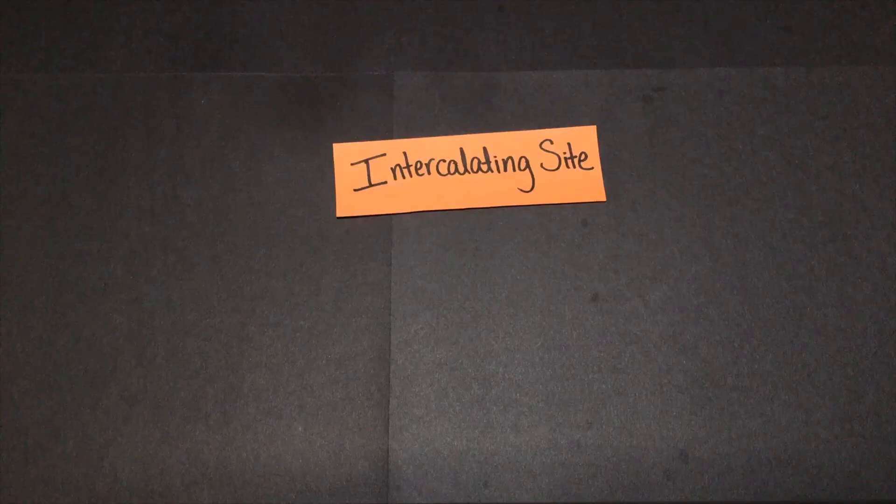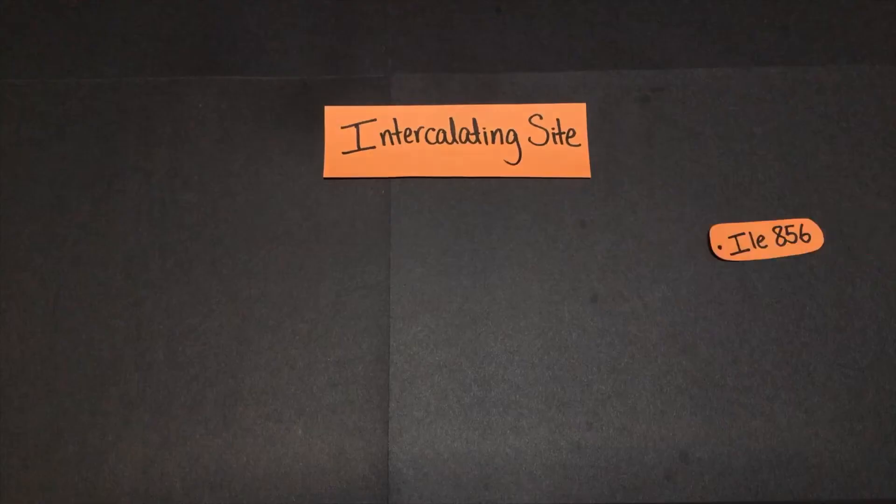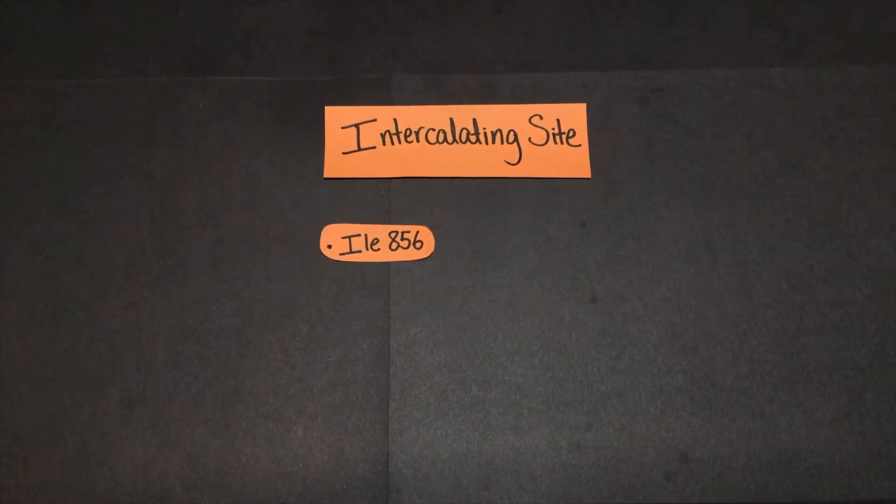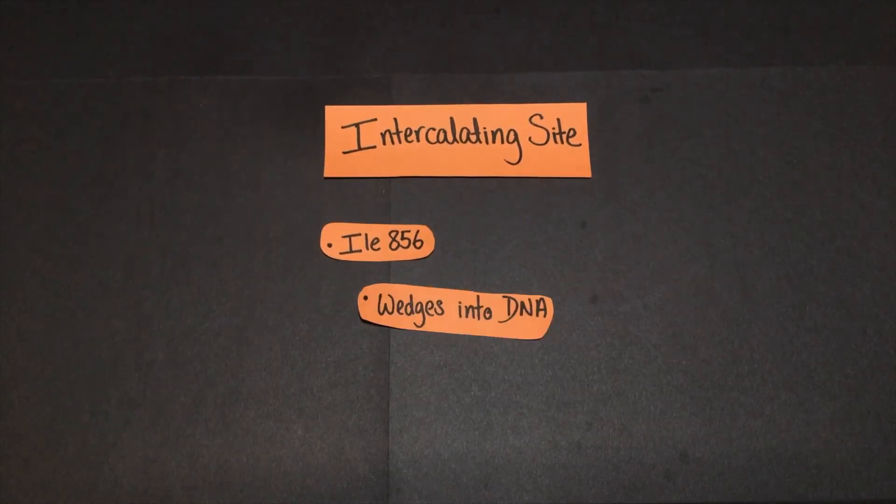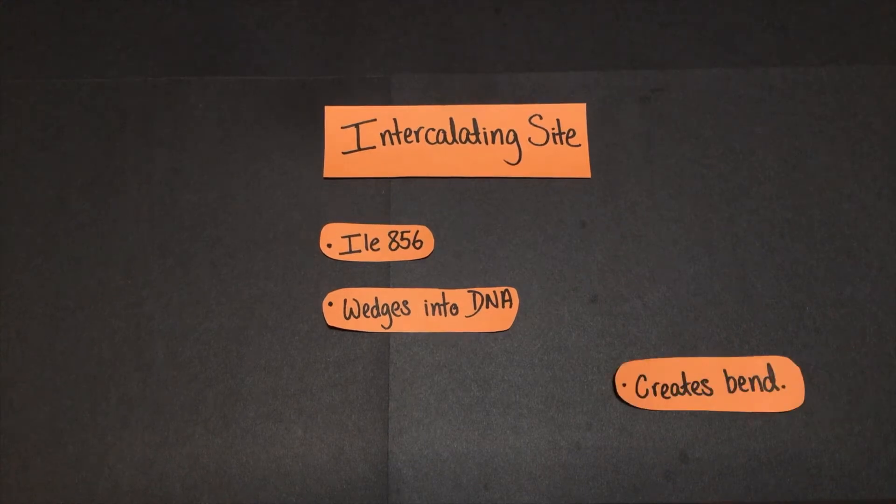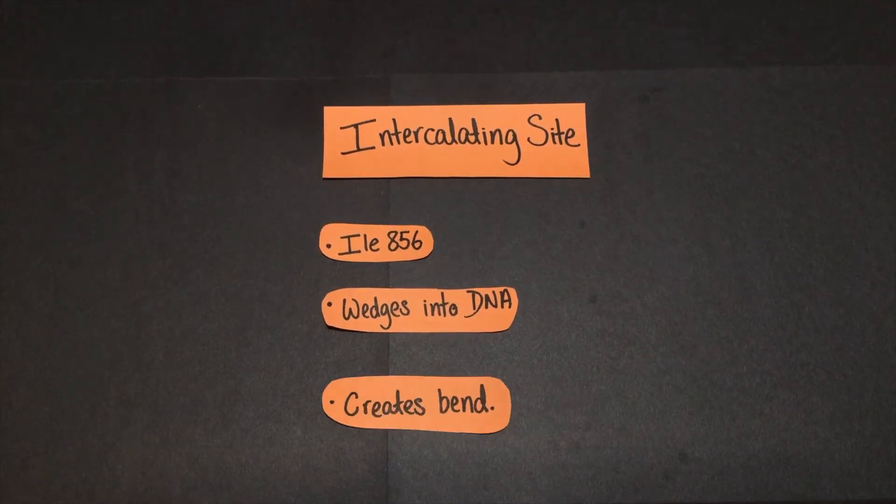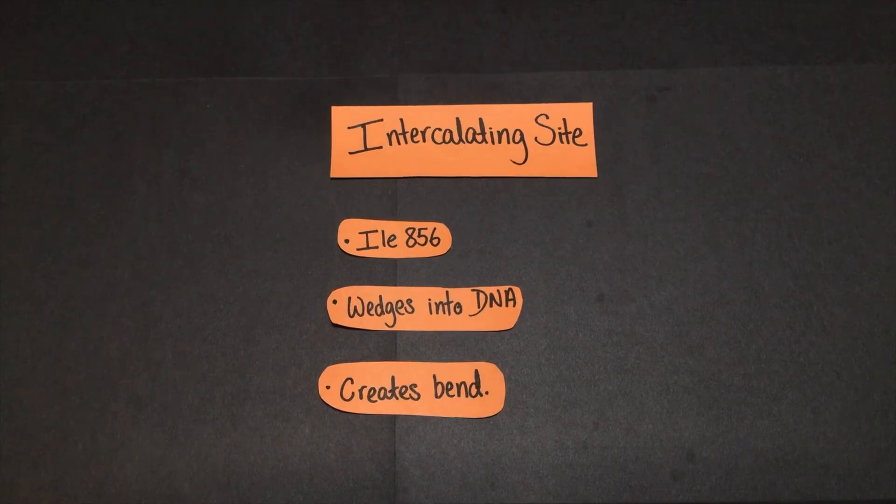The DNA gate also contains a smaller region called the intercalating site. It contains an isoleucine at position 856, which is responsible for wedging itself into DNA, helping to create a bend that creates bond strain and makes the rest of the enzyme's catalytic activity easier.